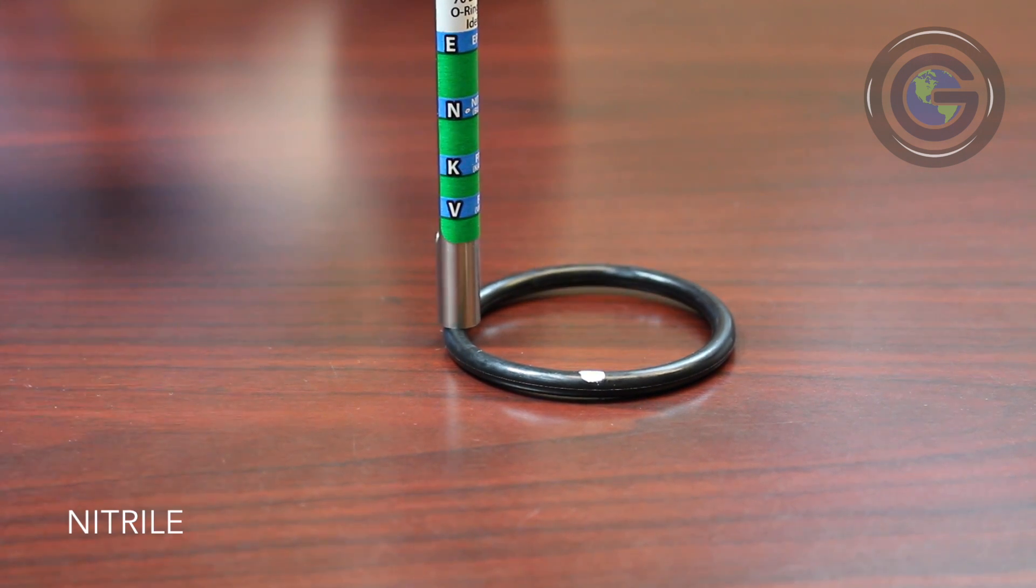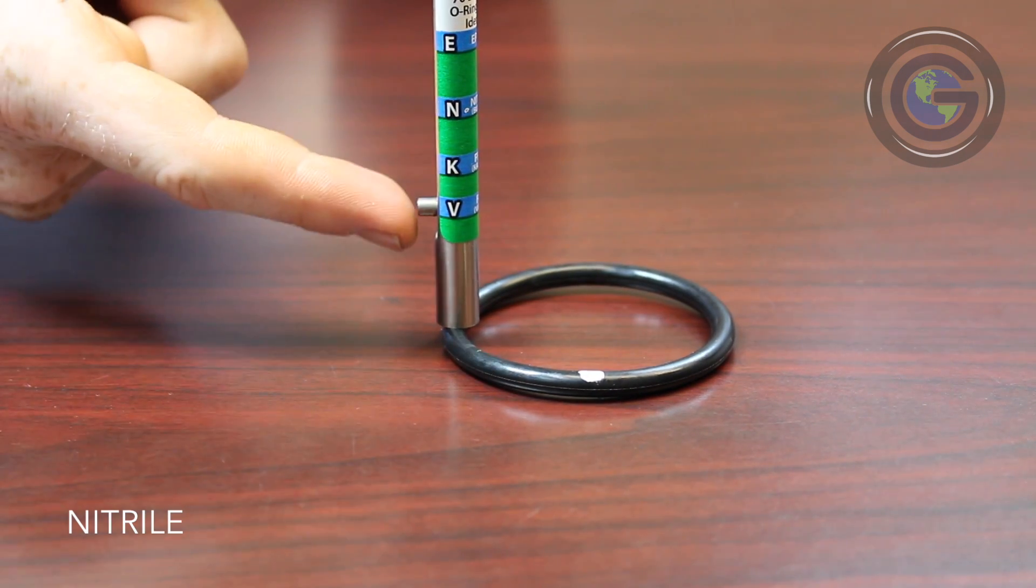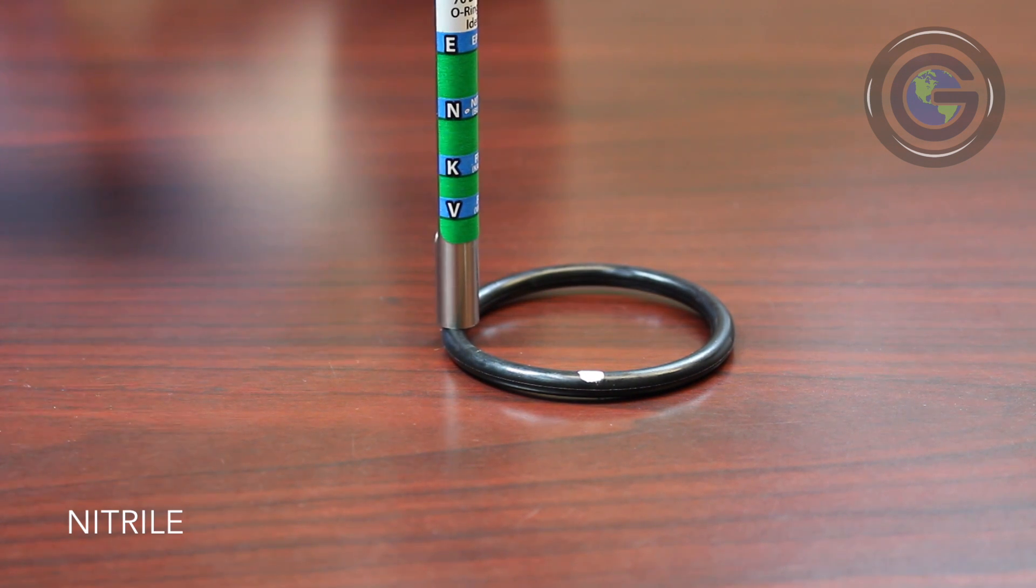On a nitrile O-ring, the weight will bounce back again, just above the N-mark on the Kevin.